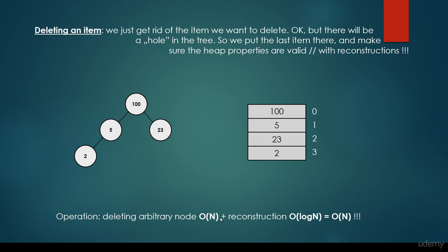That's why removing an arbitrary node is going to have O(n) running time. Because first we have to find it, which is going to take linear time complexity, and then we have to reconstruct the heap data structure, which will have logarithmic running time. But linear running time plus logarithmic running time is going to be linear running time. So if we would like to get rid of an arbitrary item, because we have to find that given item, the running time is going to reduce to O(n) linear running time, which is not that good.